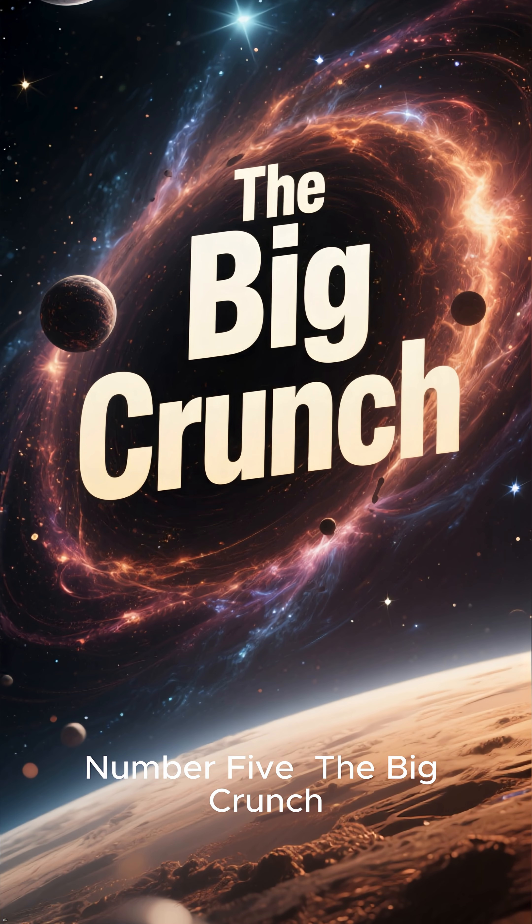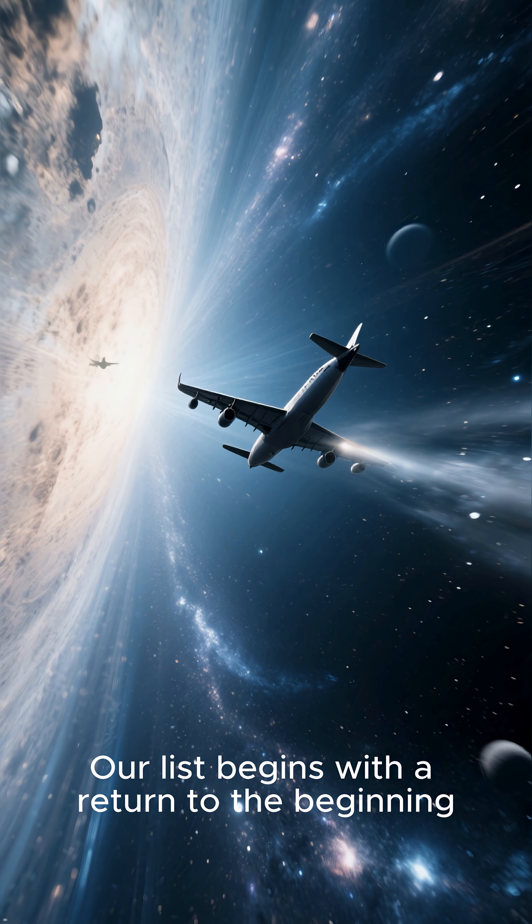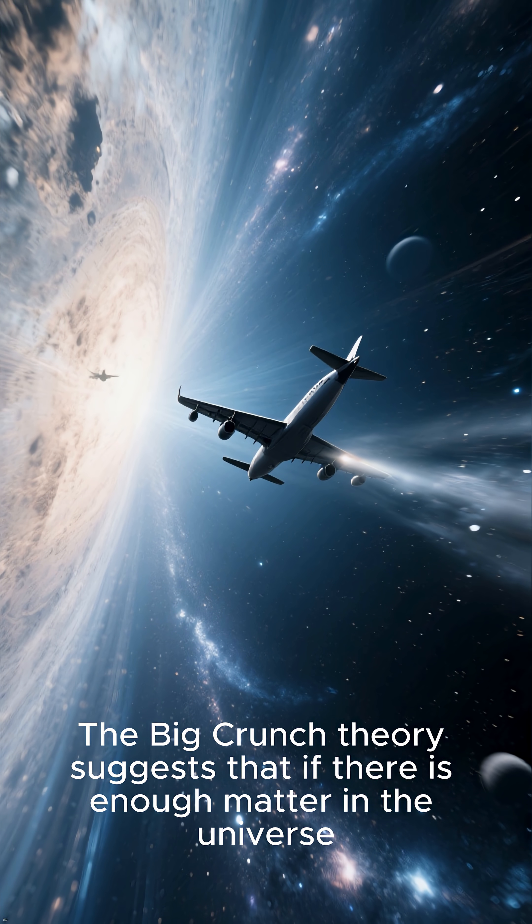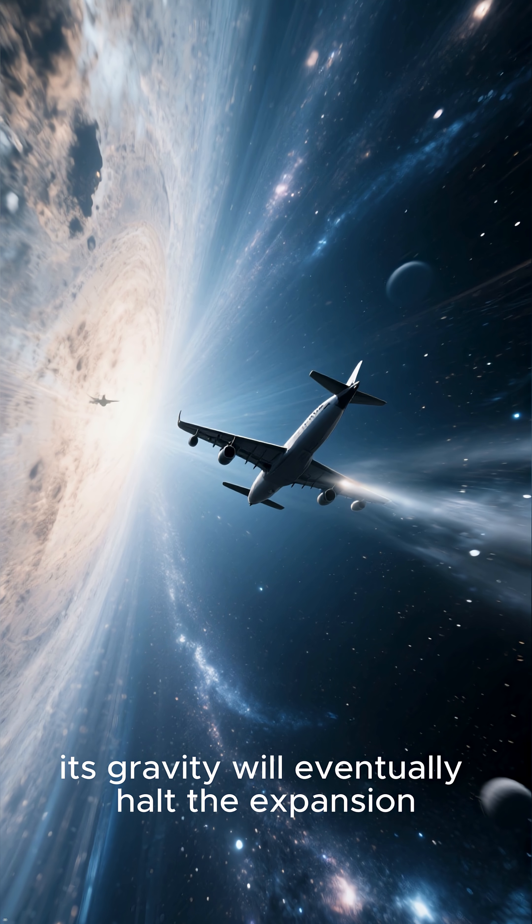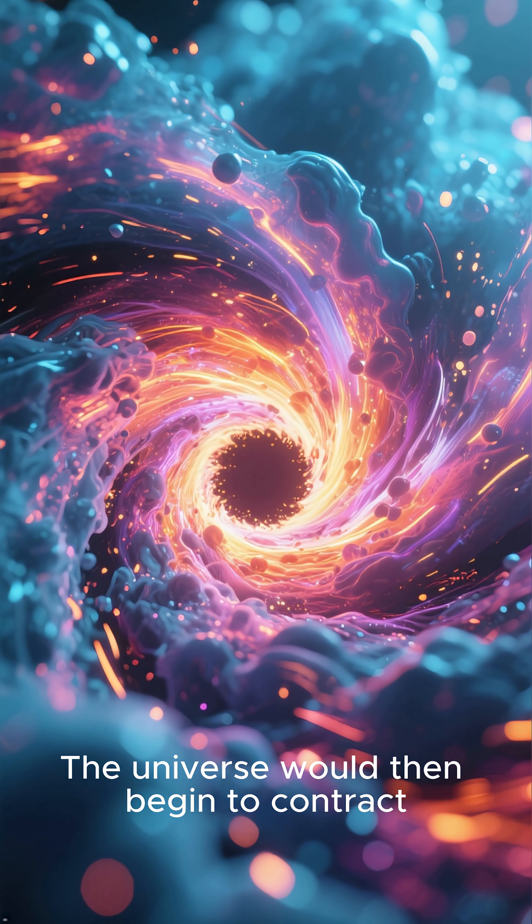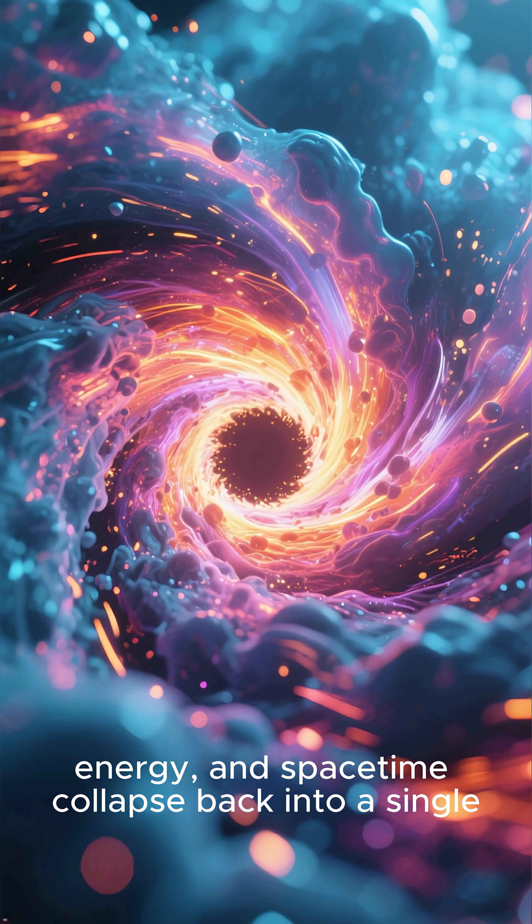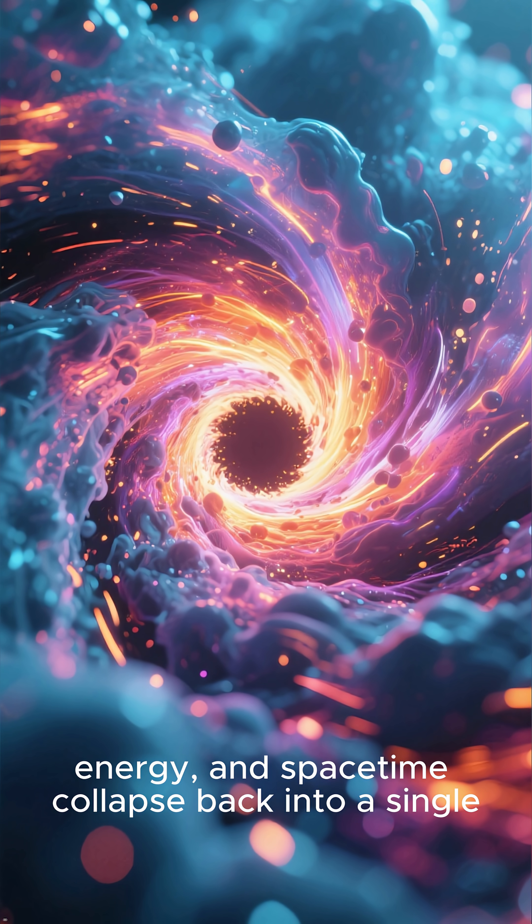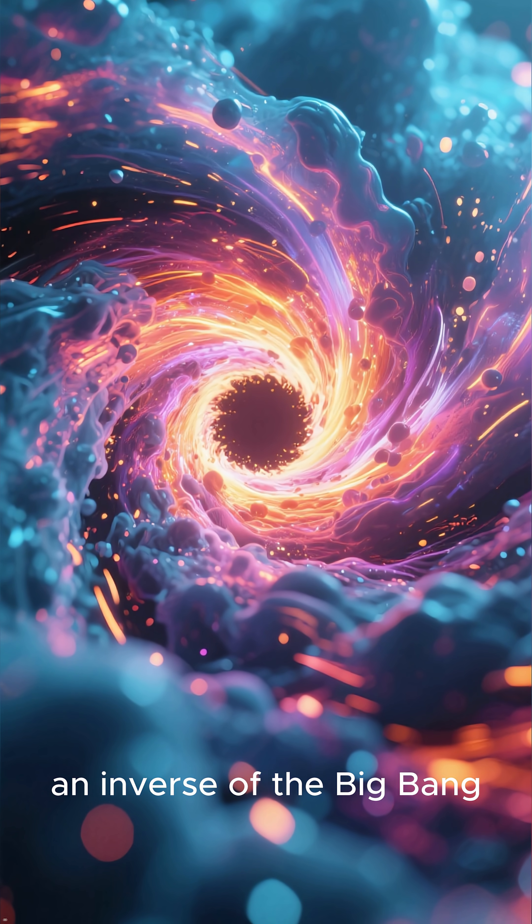Number 5: The Big Crunch. Our list begins with a return to the beginning. The Big Crunch Theory suggests that if there is enough matter in the universe, its gravity will eventually halt the expansion. The universe would then begin to contract, accelerating inward until all matter, energy, and space-time collapse back into a single, super-dense singularity—an inverse of the Big Bang.